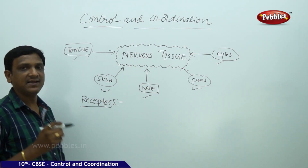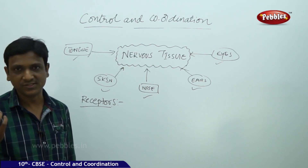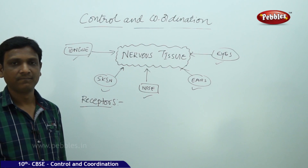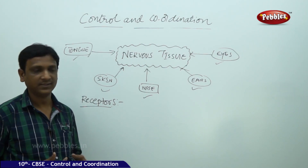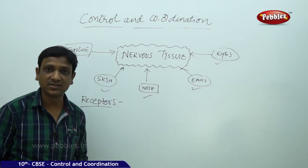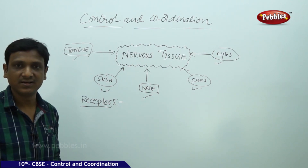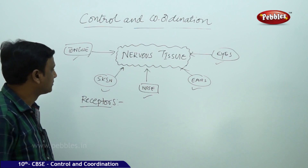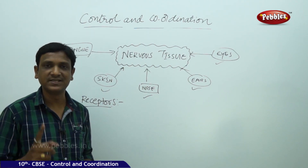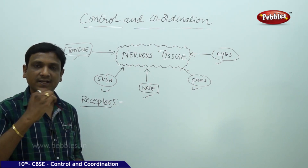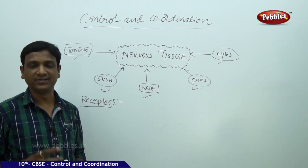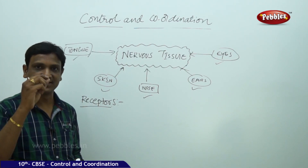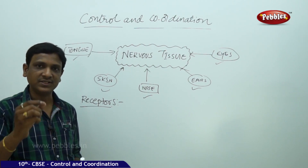A single receptor cannot identify all kinds of changes, so we have different kinds of receptors to identify different changes in the environment. If the change is of light or color, the receptor in the eyes recognizes that. If the change is of sound, the receptor in the ear identifies it. If it is a change in smell, the receptor in the nose identifies it. If it is a change in pressure, temperature — hot or cold — the receptors in the skin identify pressure, pain, and temperature. The tongue consists of special receptors to identify each distinct taste.